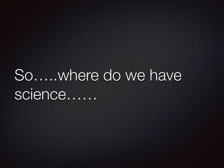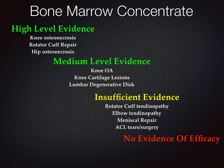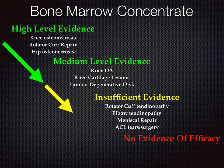So where do we really have science for use of stem cells in orthopedics? Here's an example showing currently published levels of evidence for multiple orthopedic conditions where we use autologous stem cells, primarily from bone marrow. We have high-level evidence using bone marrow concentrate for knee osteonecrosis, rotator cuff repair, and hip osteonecrosis. We have medium-level evidence for knee osteoarthritis, knee cartilage lesions, and lumbar degenerative disc disease. At this time, we have insufficient evidence for rotator cuff tendinopathy, elbow tendinopathy, meniscal repair, and ACL tears.